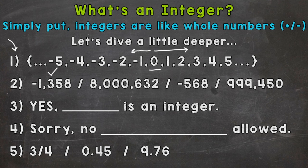The second one we have 8,000,632, then we have negative 568, and lastly 999,450, so all examples of integers.